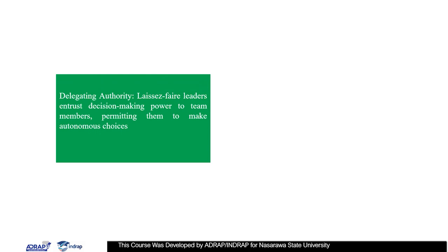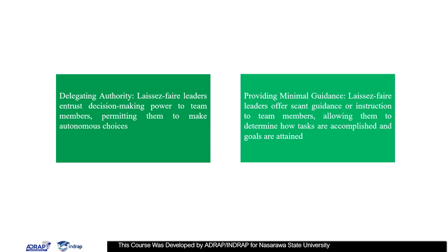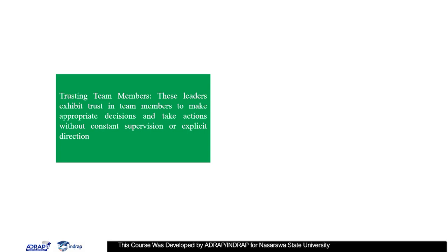Delegating authority: laissez-faire leaders entrust decision-making power to team members, permitting them to make autonomous choices. Providing minimal guidance: laissez-faire leaders often provide scant guidance or instruction to team members, allowing them to determine how tasks are accomplished and goals are attained. Trusting team members: these leaders exhibit trust in team members to make appropriate decisions and take action without constant supervision or explicit direction.